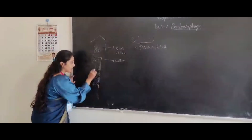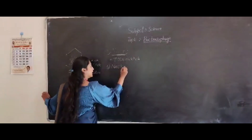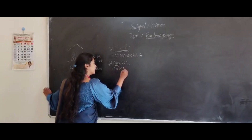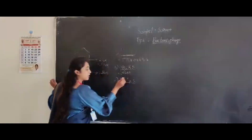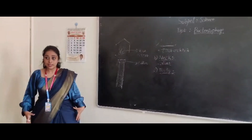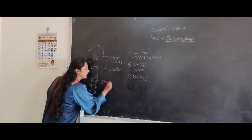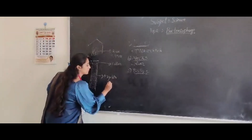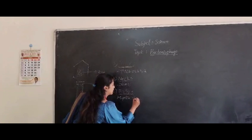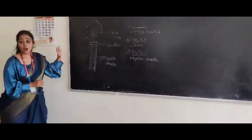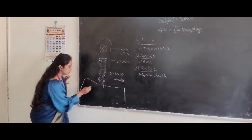This body is covered by a myelin sheath. Just as our body is covered by clothes, the bacteriophage's body is covered by a sheath called the myelin sheath. After the body, it is having tail fiber-like structures called tail fibers.